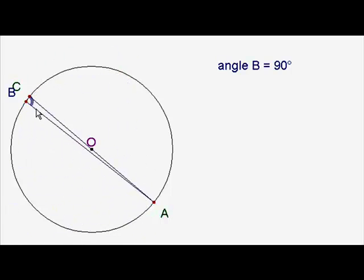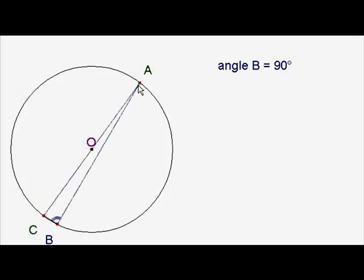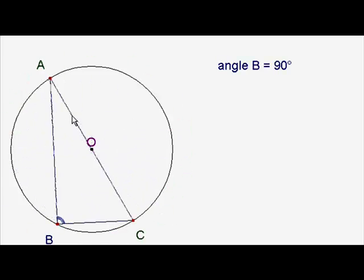The rule is quite simple, quite easy to remember. Whenever you draw an angle like this inside a semi-circle, it's always 90 degrees. Wherever you draw it, and even if you move the diameter, it's always 90 degrees.